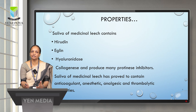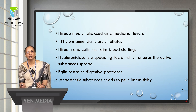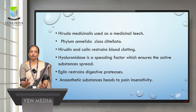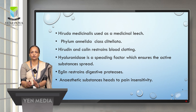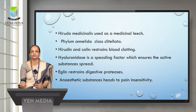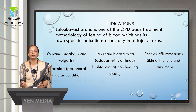The saliva of a medicinal leech has proven to contain anticoagulant, anesthetic, analgesic, and thrombolytic properties. Hirudo medicinalis is used as the medicinal leech, belonging to phylum Annelida and class Clitellata. Hirudine and calline restrain blood clotting. Hyaluronidase acts as a spreading factor, ensuring active substances spread in the local area. Eglin restrains digestive proteases, and anesthetic substances lead to pain insensitivity.